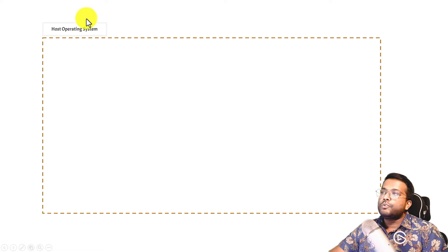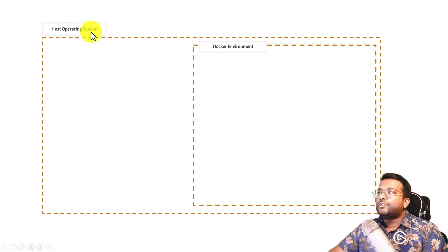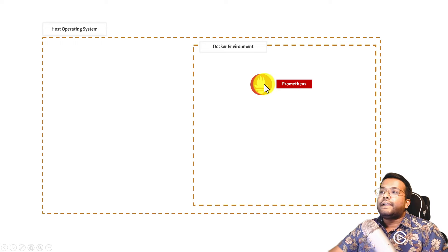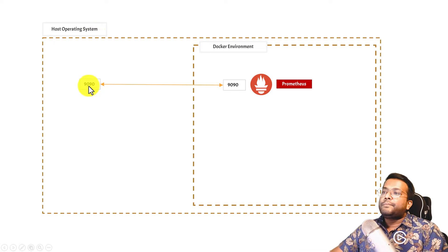There is a host operating system on your machine and a Docker environment. When you install Docker and create containers, a Docker environment is created. Inside that environment, we will create a Docker container for Prometheus. Prometheus will expose port 9090 inside the Docker environment, and that will be mapped to port 9090 on the host operating system, so you can access Prometheus using that port.